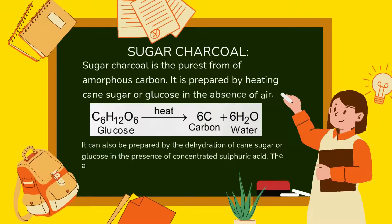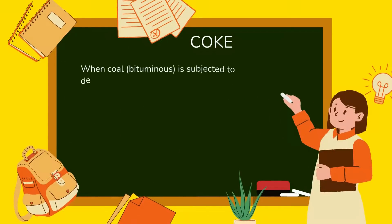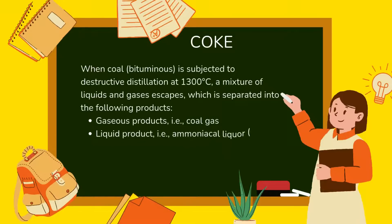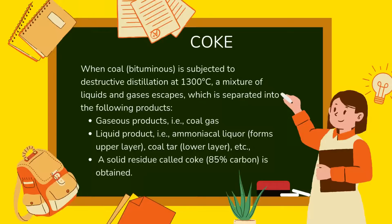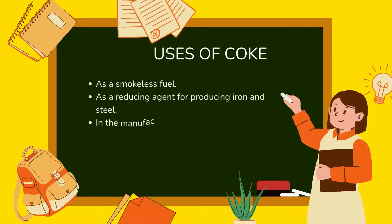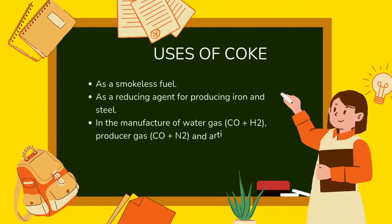Sugar charcoal is the purest form of amorphous carbon. It is prepared by heating cane sugar or glucose in the absence of air, or by dehydration of cane sugar or glucose in the presence of concentrated sulfuric acid, which absorbs the water to leave behind carbon. Coke: when bituminous coal is subjected to destructive distillation at 1300°C, a mixture of liquids and gases escapes. Products include coal gas, ammoniacal liquor, coal tar, and a solid residue called coke (85% carbon). Uses of coke: as a smokeless fuel, as a reducing agent for producing iron and steel, and in the manufacture of water gas (CO + H₂), producer gas (CO + N₂), and artificial graphite.